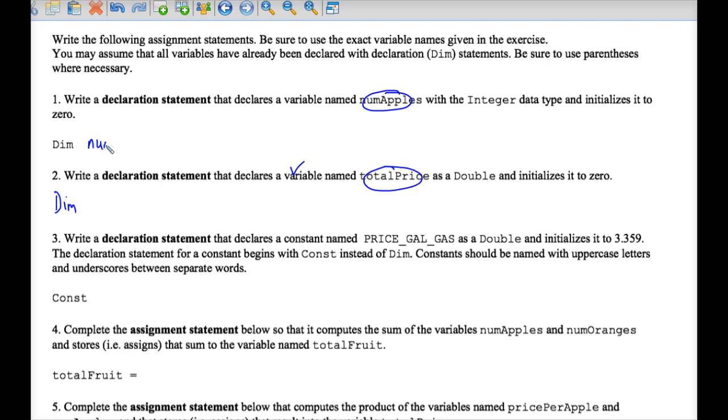So example number one, numapples, would be the name of the variable. And you have to choose a data type. It's as easy as that. Data types are integer, double, or string.